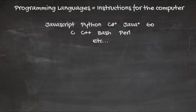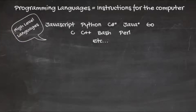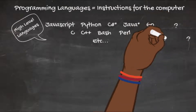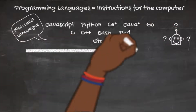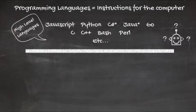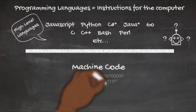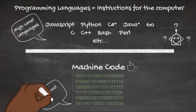The thing about programming languages is that they aren't inherently understood by computers. The styling and syntax of those languages are designed so that humans can understand them, and for that reason they're known as high-level languages. Computers don't understand high-level languages — they don't understand the code that we actually write.